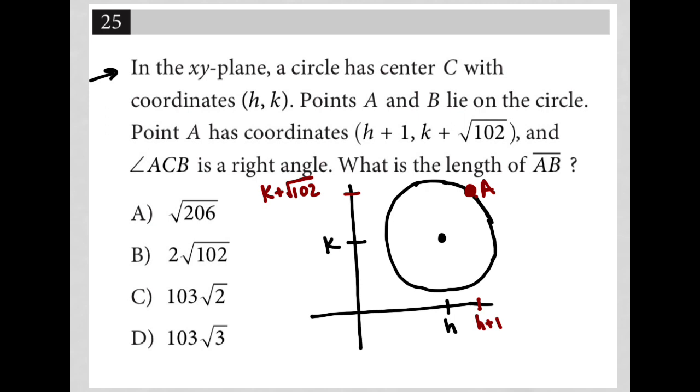And then angle ACB is a right angle. So then that means if I were to connect A to C, which is the center, then that means that tells me that B has to be like there in order to make this a right angle. All right, so now I know where A and B are.